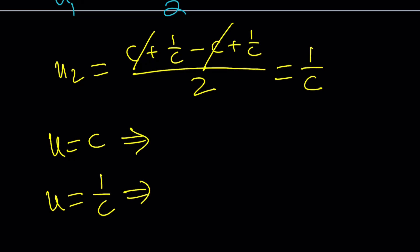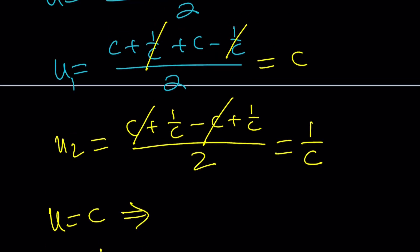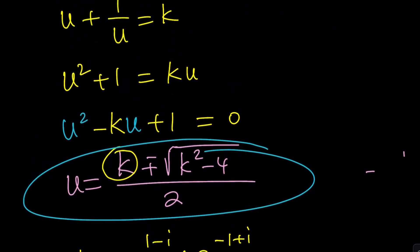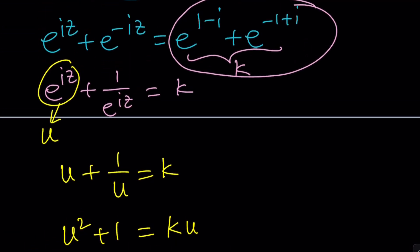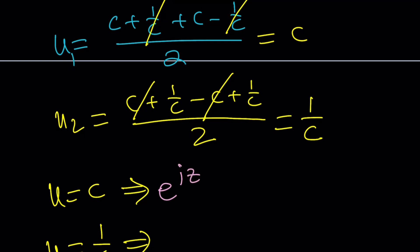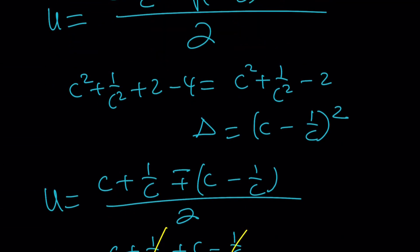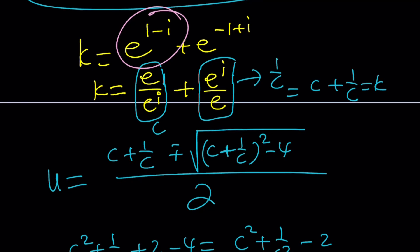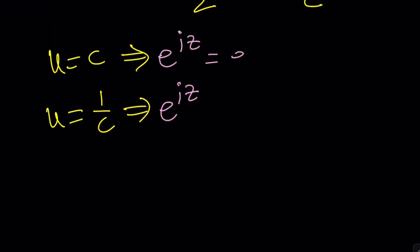We got u equals c and u equals 1 over c. Back-substituting: u is e to the power iz, c is e to the power 1 minus i, and 1 over c is e to the power negative 1 plus i. From the first case, e to the iz equals e to the 1 minus i, so iz equals 1 minus i. Dividing both sides by i and multiplying by negative i: z equals negative i times 1 minus i, which is negative i plus i squared equals negative 1 minus i.